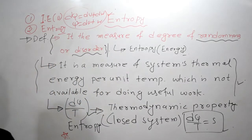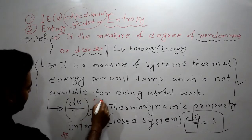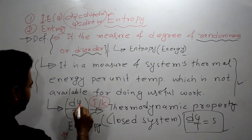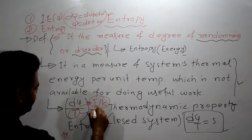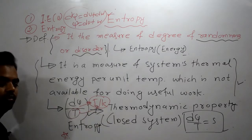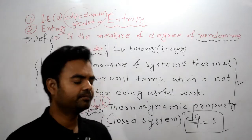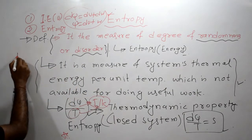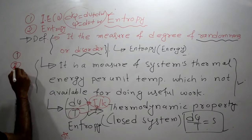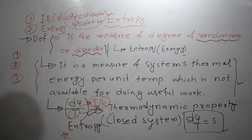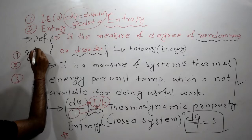That is why we generally study entropy after studying the second law of thermodynamics. The unit of entropy is joule per kelvin — joule is heat energy and kelvin is the SI unit of temperature — so joule per kelvin is the SI unit of entropy.